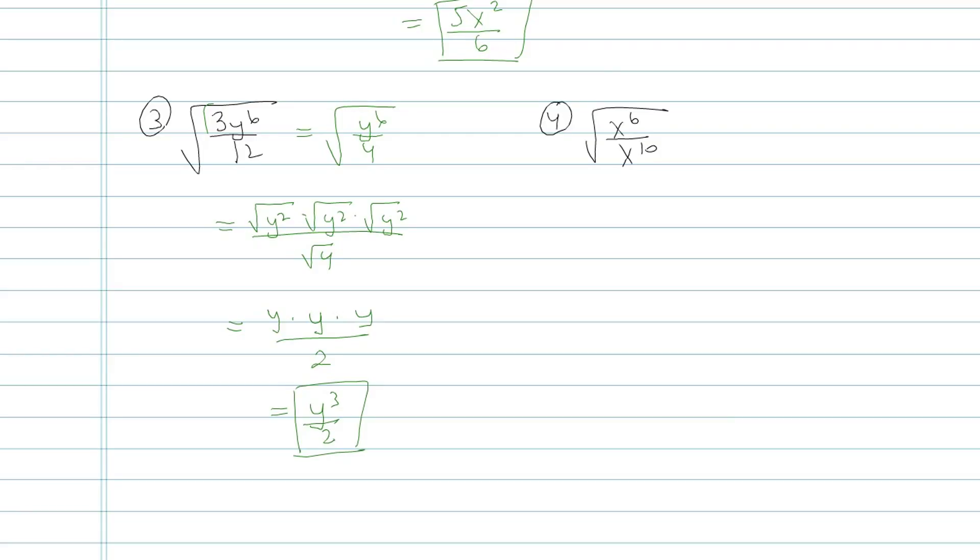Last one. This fraction's got to be simplified. x to the sixth on top of x to the tenth. I could make my life so much easier if I rewrite that as square root of 1 over x to the fourth. What I did is I subtracted 6 minus 10 to get negative fourth.